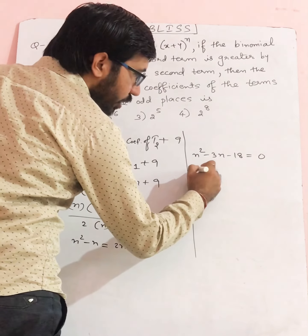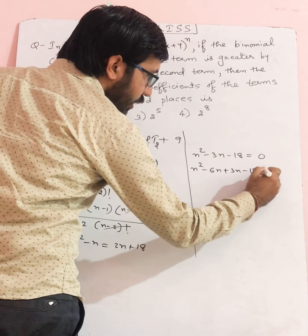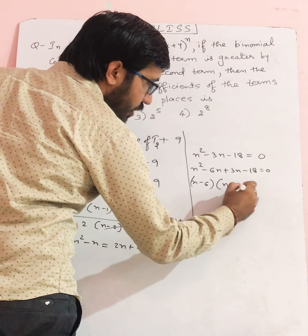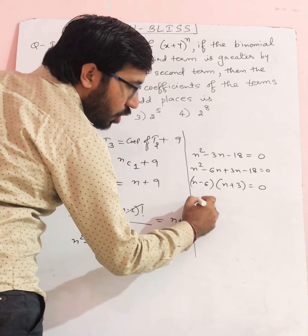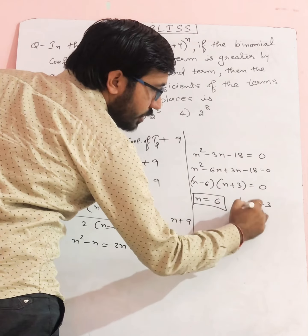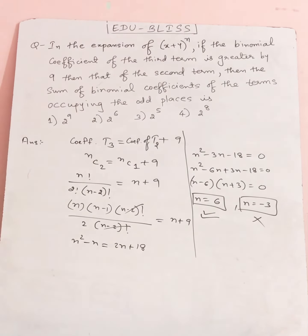Using middle term split: n² - 6n + 3n - 18 equals 0. Factoring: (n-6)(n+3) equals 0. Since n negative is not possible, n equals 6 is the correct answer. N equals minus 3 not possible, so n equals 6 is the correct answer.